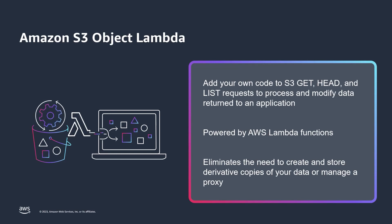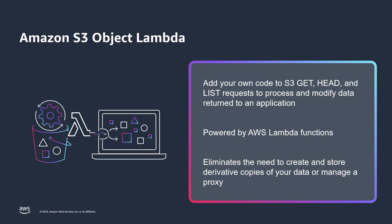You can easily present multiple views of your data for different applications by simply adding your own code with S3 GET, HEAD, and LIST requests to modify data as it is returned to the application. Because S3 Object Lambda is powered by AWS Lambda functions, your code runs on infrastructure that is fully managed by AWS. This eliminates the need to store derivative copies of your data or to run expensive proxies.